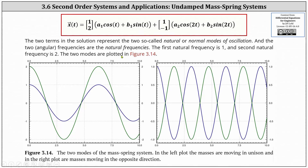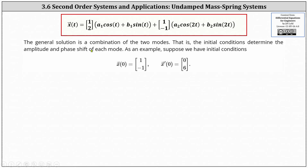The two terms in the solution represent the two natural or normal modes of oscillation. The two angular frequencies are the natural frequencies: omega one equals one and omega two equals two. In the left plot the masses move in unison; in the right plot the masses move in opposite directions. The general solution is a combination of the two modes, and the initial conditions determine the amplitude and phase shift of each mode.